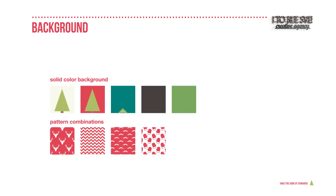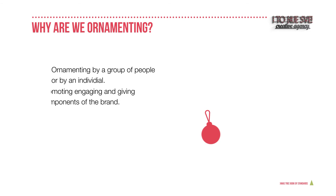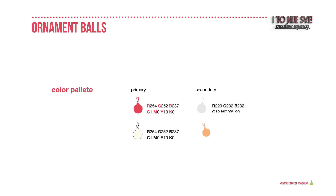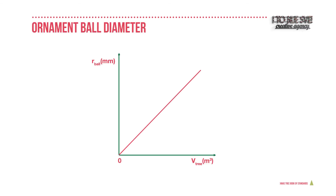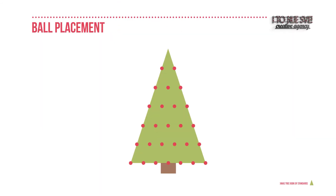Now, decorations. Christmas trees are meant to be ornamented so that brand values and character come to life. Ornament balls — the round shape symbolizes the perfection of Christmas Day and is finished by the crown. Only the right diameter of the ball keeps the Christmas tree from appearing insufficiently big.